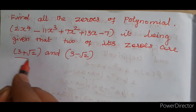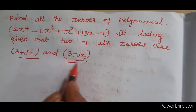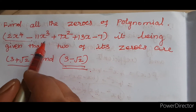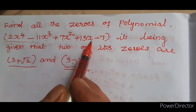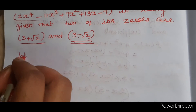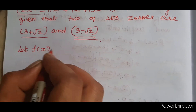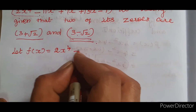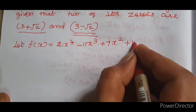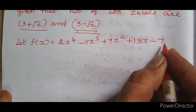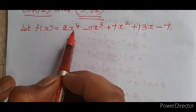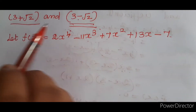So, two zeros are given: 3 plus root 2 and 3 minus root 2. Let f(x) equal to 2x⁴ minus 11x³ plus 7x² plus 13x minus 7. The degree of this polynomial is 4.